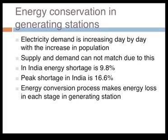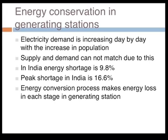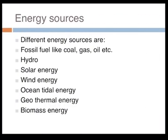Talking about Energy Conservation in Generating Stations, we can save energy at different stages of energy conservation processes. The different kinds of energy sources available are fossil fuel, hydro, solar energy, wind energy, ocean tidal, geothermal, biomass, and biogas. Now we will take electrical power generation in detail.